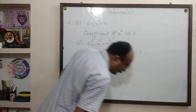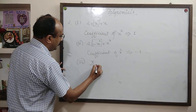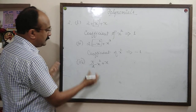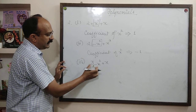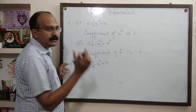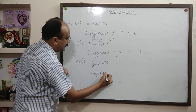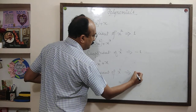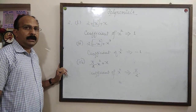Question number 3: pi upon 2 x square plus x. You can see very easily the x square term, and the coefficient of x square is pi upon 2. The numeral present along with x square is called its coefficient. So coefficient of x square in this question is pi upon 2.